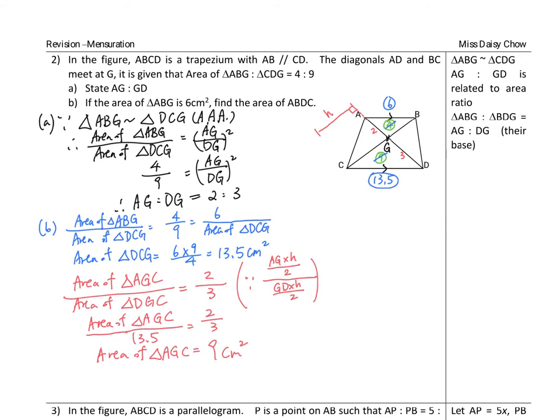Similarly, this time we will look at these two triangles. These two triangles, if I take this as the bottom AG and GD, I take it as the bottom.